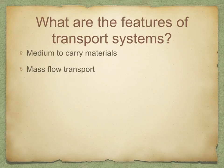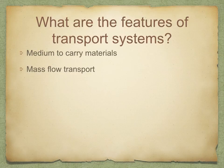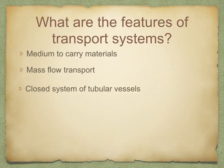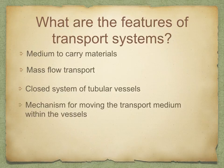So what are the features of transport systems? They need a suitable medium to carry materials — for example, blood — which comprises a lot of water that dissolves substances readily. They need a form of mass flow transport, in which the transport medium is moved around in bulk over large distances. They also need a closed system of tubular vessels that contains the transport medium and forms a branching network to distribute it along specific routes to all parts of the organism — for example, your blood vessels.